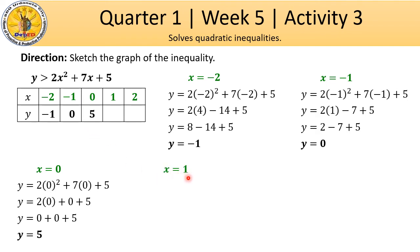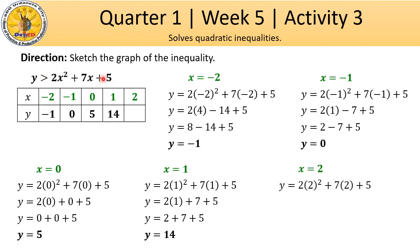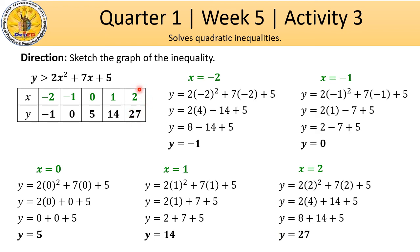For x equals 1: 2 times 1 is 2. 7 times 1 is 7. Plus 5. So 2 plus 7 plus 5 equals 14. Therefore, y equals 14 when x equals 1. For x equals 2: 2 times 4 is 8. 7 times 2 is 14. Plus 5. So 8 plus 14 plus 5 equals 27. Therefore, y equals 27 when x equals 2. Now we have our complete table of values for x and y.